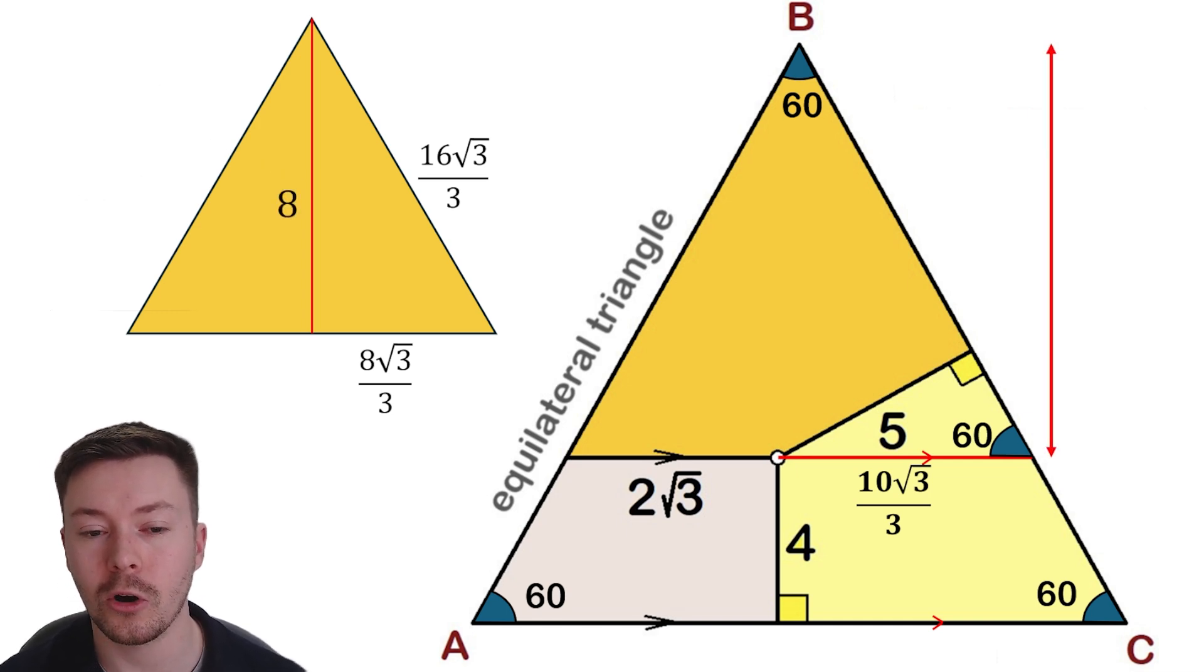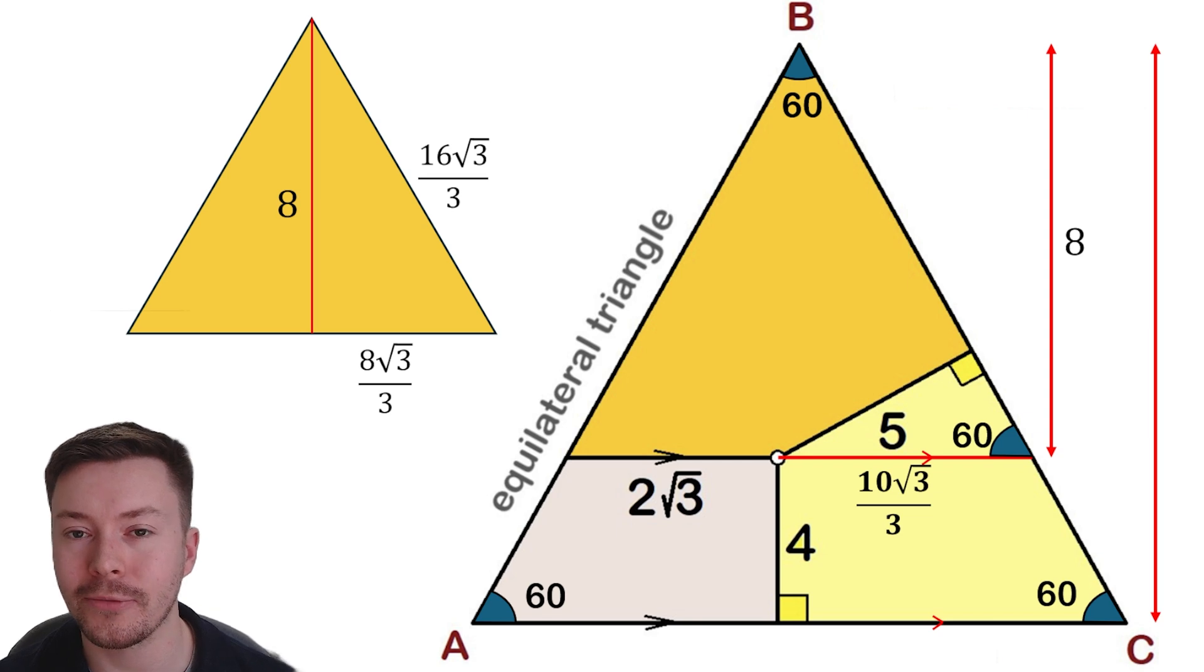So let's put that onto my diagram. That height is 8. Now the full height must then be 8 plus 4, because we've got 4 underneath that in the rest of the triangle, so that gives us a total height of 12 for the full triangle ABC.